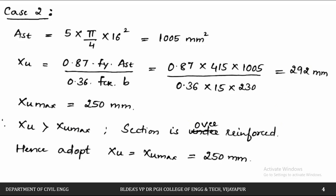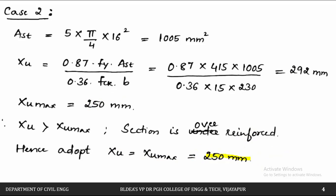You cannot design a section as over-reinforced because it leads to brittle or compression failure. Therefore we always limit the section to under-reinforced. What we do is adopt XU = XU max = 250 mm. We cannot go beyond this value, as doing so would make our section over-reinforced.